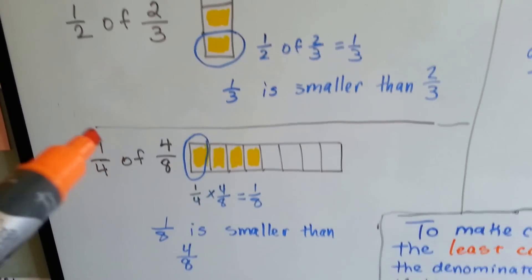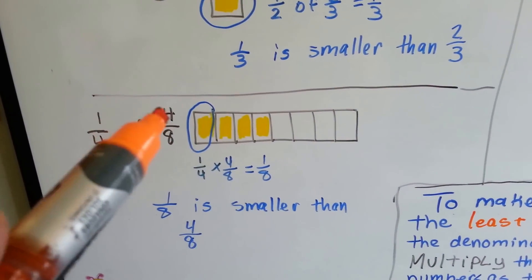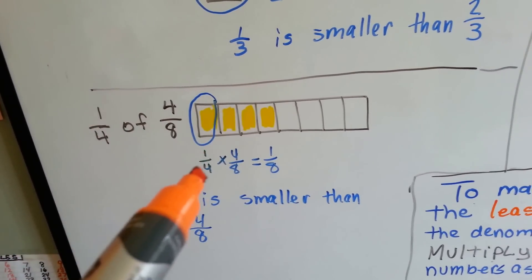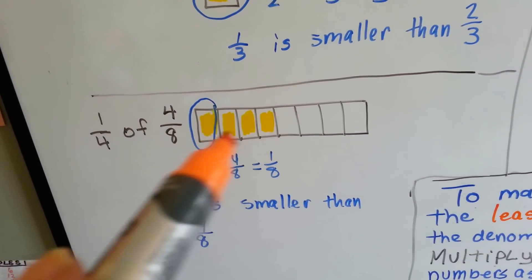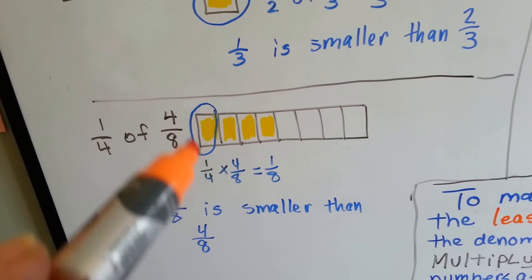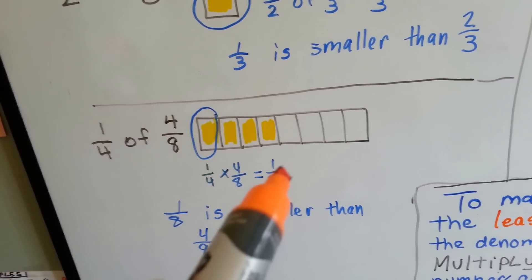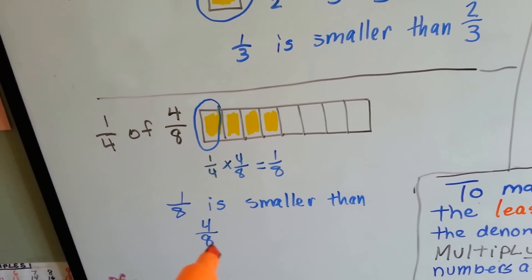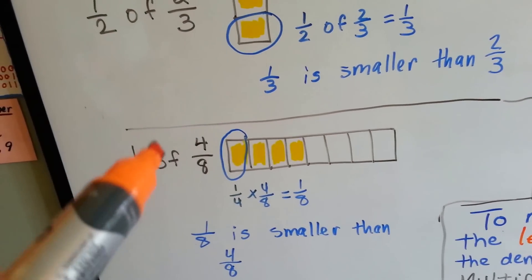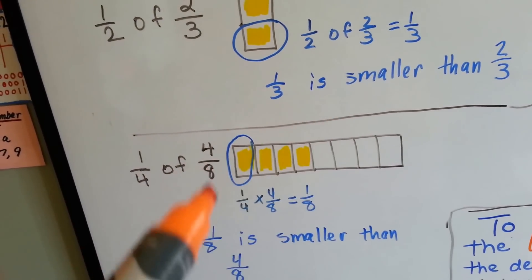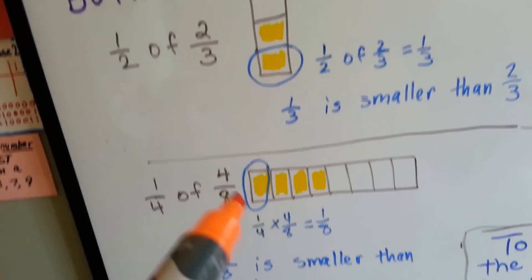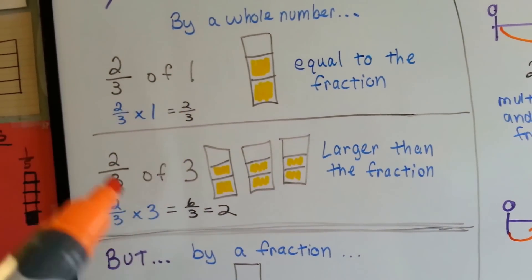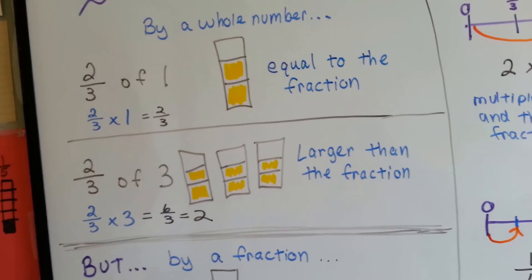So remember, when we multiply a fraction by a fraction: one-fourth of four-eighths is like saying one-fourth times four-eighths. Here's four-eighths, and if we took one-fourth of it, we would have one-eighth. One-eighth is smaller than four-eighths. Anytime you multiply a fraction by a fraction, it's going to be smaller than that fraction. Anytime you multiply a fraction by a whole number, it's going to be bigger than that fraction.